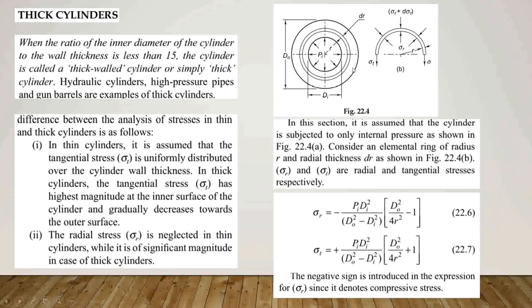In figure 22.4, we see a thick cylinder where DO is the outer diameter, DI is the inner diameter, and PI is the internal pressure. In this section, it is assumed that the cylinder is subjected to only internal pressure. From the radial and tangential stress analysis, sigma-r equals minus PI times DI² divided by (DO² minus DI²) times (DO²/(4R²) minus 1).